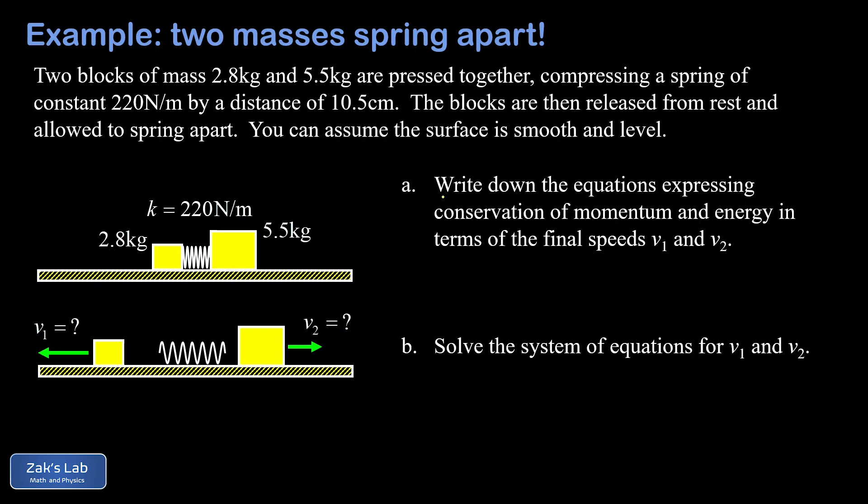In part a, we want to write down the equations expressing conservation of momentum and energy. In our initial state, we don't have anything moving at all, which means our initial momentum is zero. So if we start by writing down conservation of momentum, p_initial equals p_final, our initial momentum is zero, which I'm going to write as the zero vector, and then our final momentum is the sum of a leftward momentum and a rightward momentum, and we keep track of those with plus and minus signs.